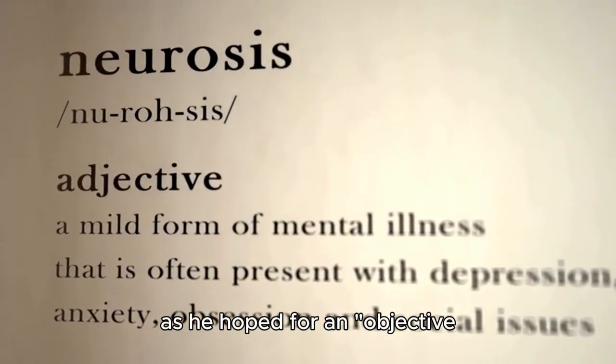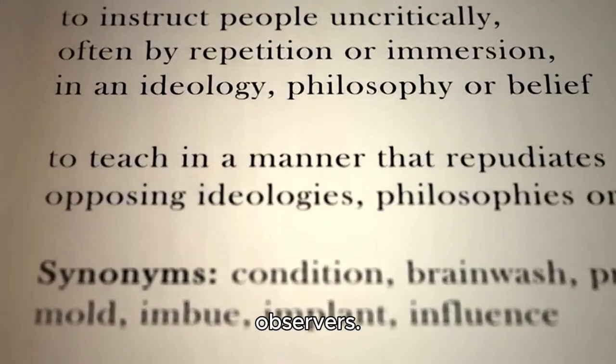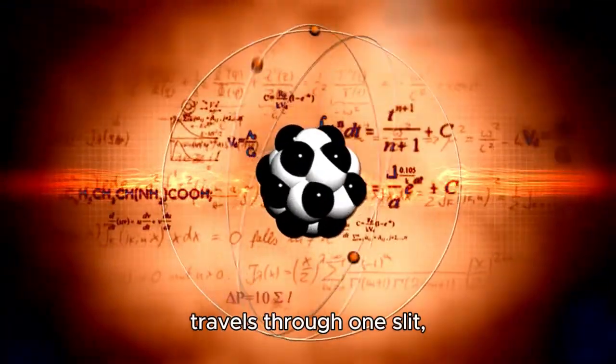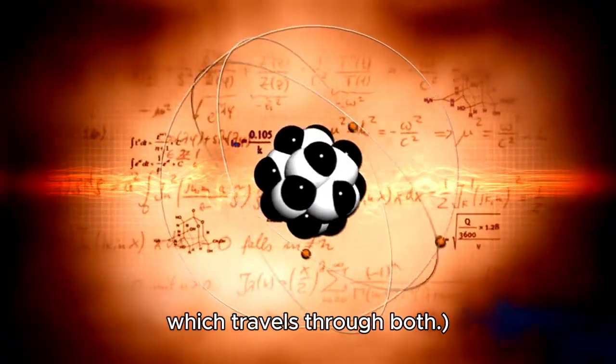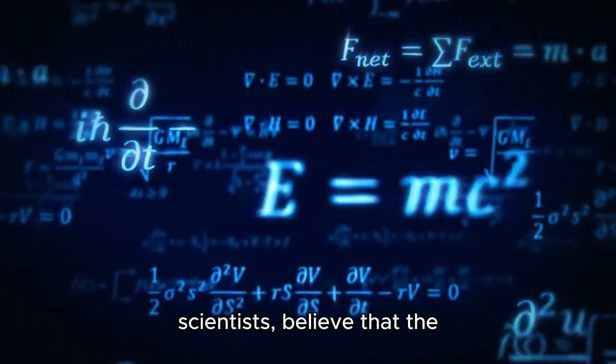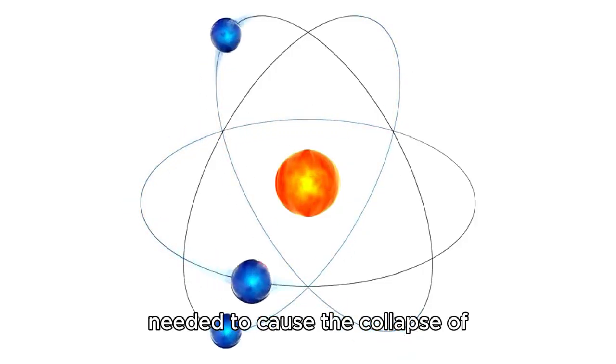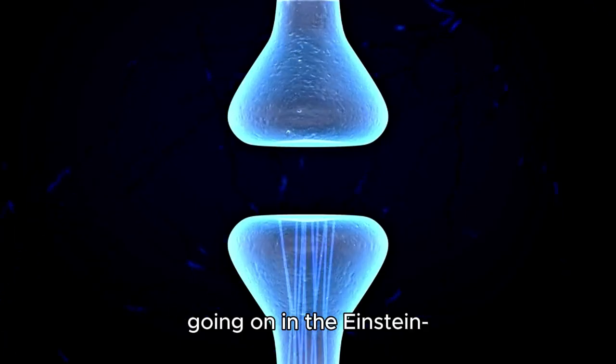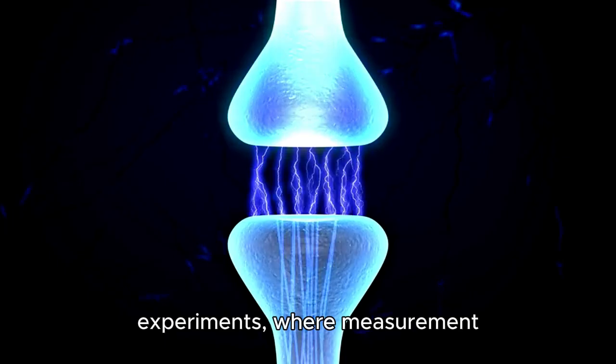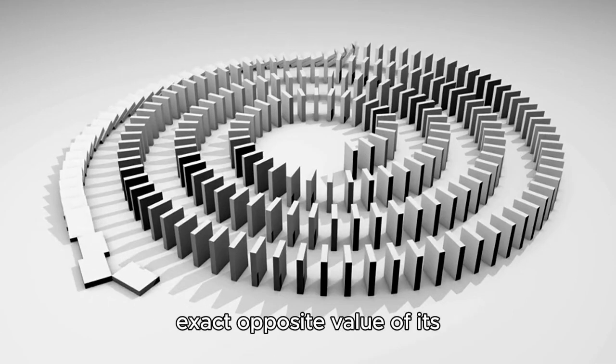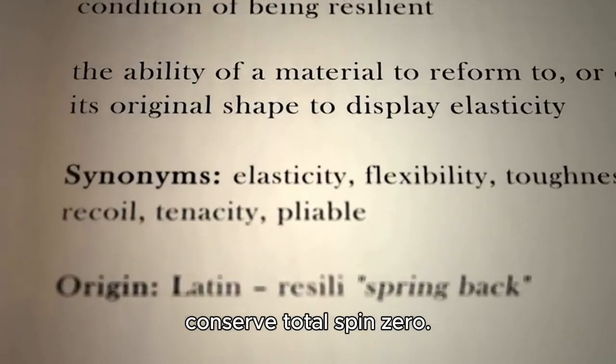David Bohm's pilot wave theory agrees that an objectively real particle travels through one slit, guided by its pilot wave, which travels through both. A large number of panpsychists, some philosophers, and some scientists believe that the mind of a conscious observer is needed to cause the collapse of the wave function. There is something similar going on in the Einstein-Podolsky-Rosen thought experiments, where a measurement of a particular spin component of one particle means that the other particle now has the exact opposite value of its same spin component to conserve total spin zero.